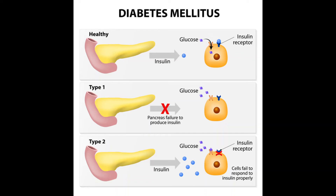Hearing impairment — hearing problems are more common in people with diabetes. Alzheimer's disease — type 2 diabetes may increase the risk of dementia such as Alzheimer's disease. Depression symptoms are common in people with both type 1 and type 2 diabetes.